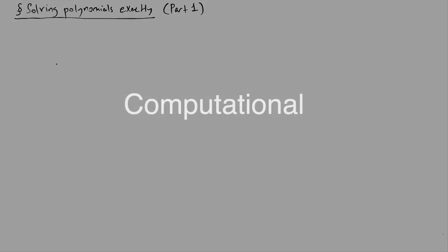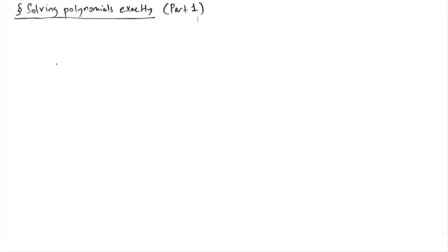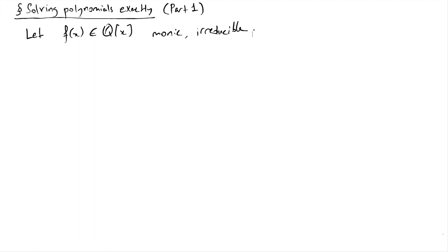Hello everyone and welcome to another session of computational algebraic geometry. We will continue to talk about solving polynomials, and this time we will solve polynomials exactly. Previously we were talking about approximations. Our principal aim is to start with a polynomial with rational coefficients — let's say this is monic and irreducible — and we want to work with the roots of f.